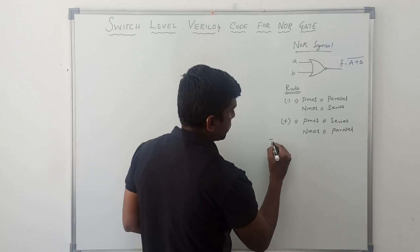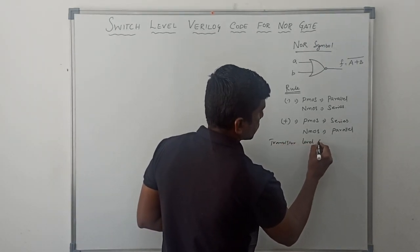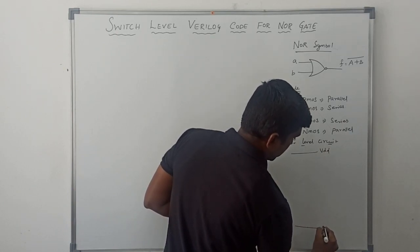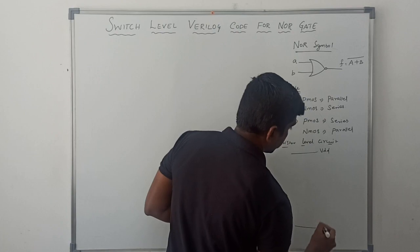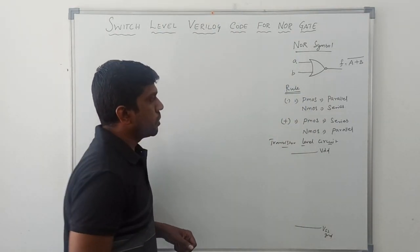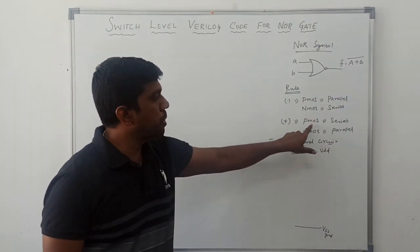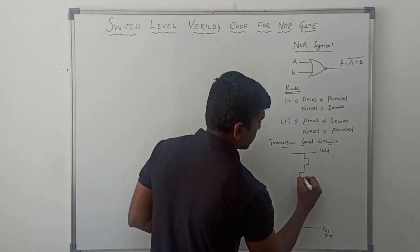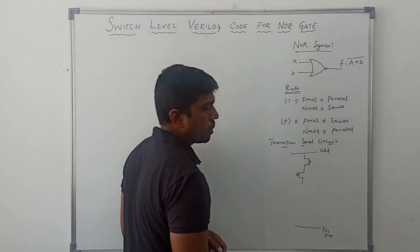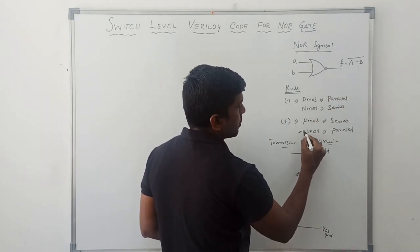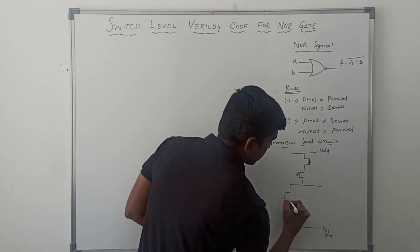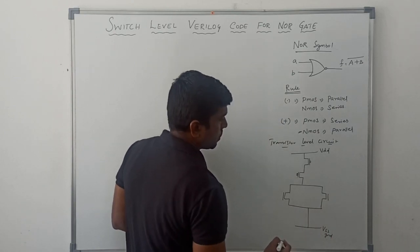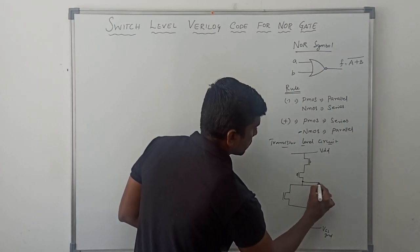Now I draw the transistor level circuit. So, this is VDD and this one is VSS, which is ground. First I draw the pull-up network. In this boolean expression, the plus operator is present, which means P-MOS transistors connect in series. It has two variables, so I need two P-MOS transistors. The plus operator also means N-MOS transistors connect in parallel. This point connects to ground and the output is taken from here.